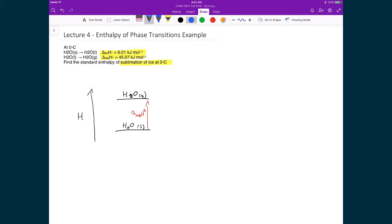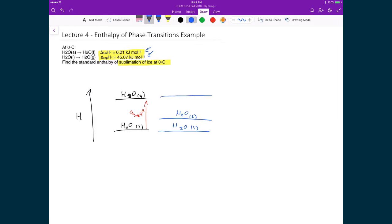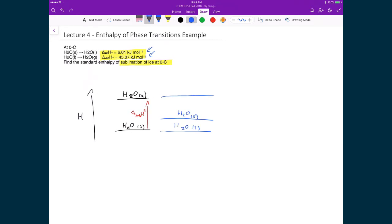And what we're going to end up calculating instead since we're given these two numbers. What we can then instead calculate is here is the H2O solid. We have a small change to get to H2O liquid. And then we have a larger change to get to H2O gas. And so all we're going to do is we're just going to add up these two changes that we know that leads us to the same place. Since again, enthalpy is a state function.